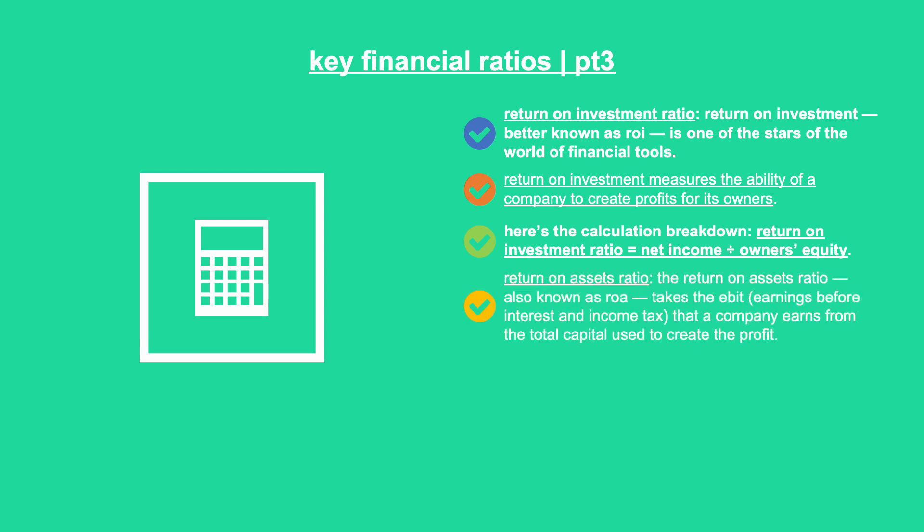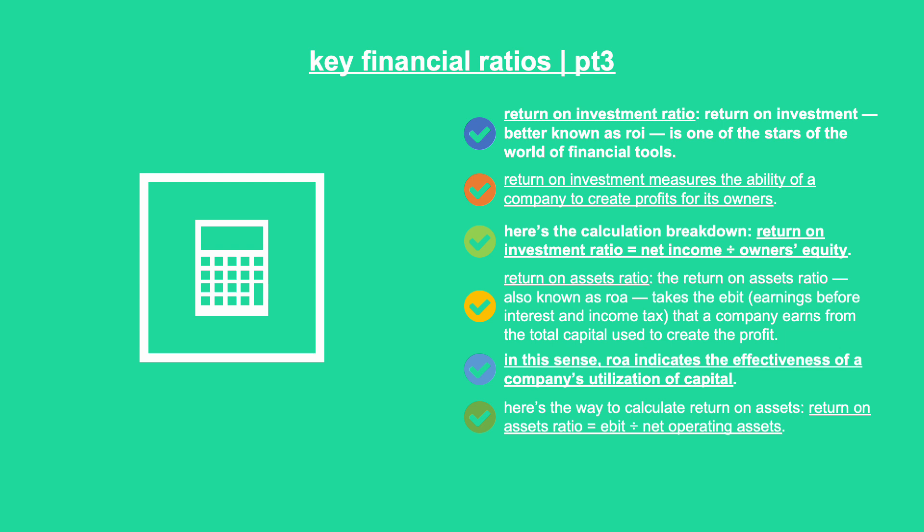Return on assets ratio: the return on assets ratio, also known as ROA, takes the EBIT — earnings before interest and income tax — that a company earns from the total capital used to create the profit. ROA indicates the effectiveness of a company's utilization of capital. Return on assets ratio equals EBIT divided by net operating assets. Acceptable ROA ratios vary depending on the industry — ratios below 5% are generally indicative of asset-heavy businesses such as manufacturing and railroads, while ratios of more than 20% are indicative of asset-light companies such as software and advertising firms.